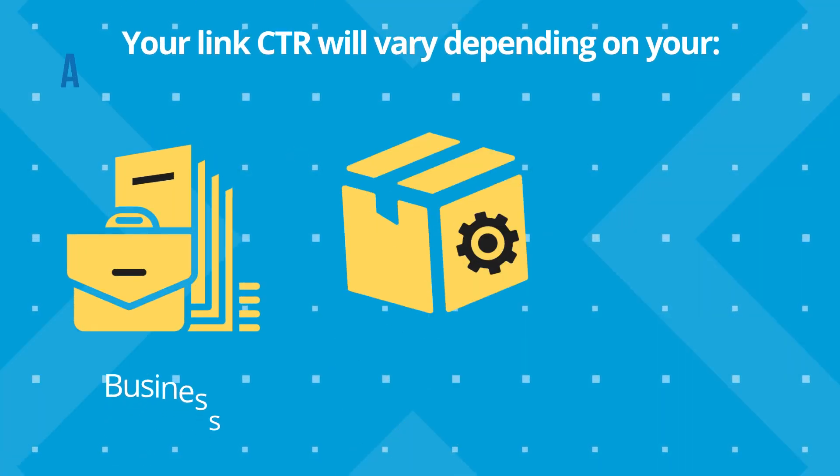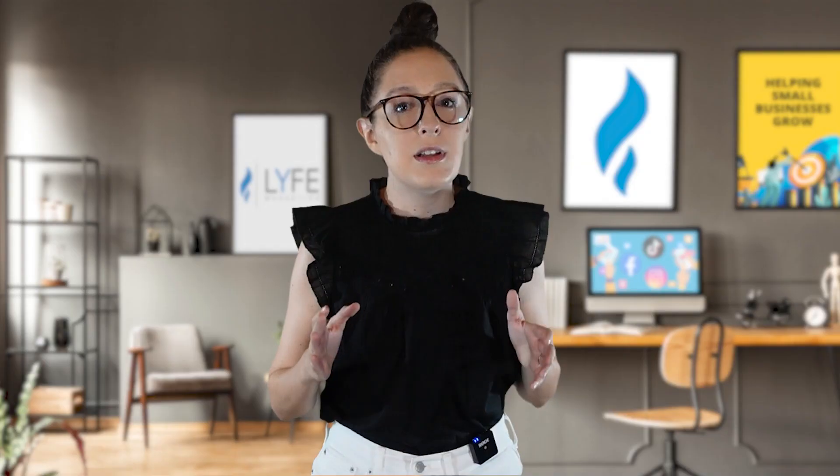Your link CTR will vary depending on your business, industry, and target audience. If your cost per result is really high or you're not getting any sales, and your frequency is low, then you look at your CTR. If your CTR is low or your link clicks are low, that means there's either something wrong with the ad itself or the target audience you're delivering it to — either your ad isn't captivating enough or addressing the right pain points, or you're showing it to the wrong audience. Now if you are getting a lot of link clicks but not conversions, that means your ad is doing its job — it's getting people's attention and getting them to click to your site, but something on your site is deterring them from purchasing.